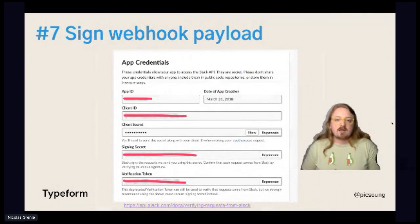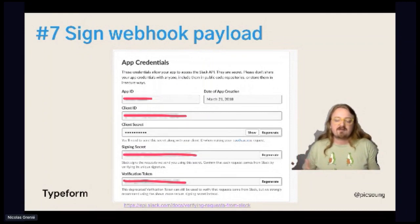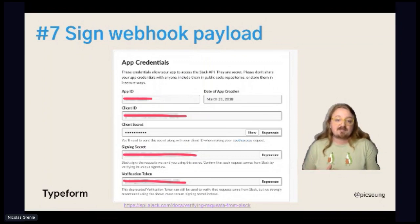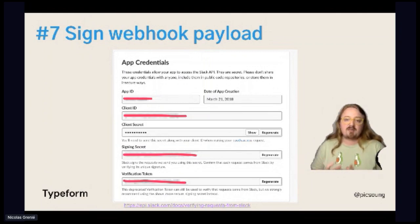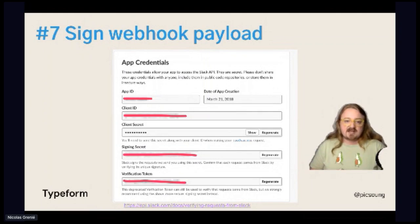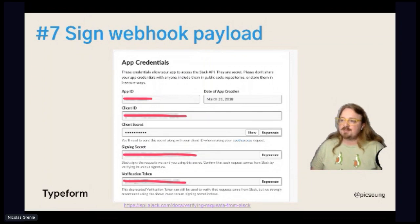Another thing that's becoming a standard now is signing webhooks. A webhook is actually just a URL available somewhere on your server or cloud function, and it's pretty easy to find the URL. But if someone sends data to it, you want to be sure that this data is what you were expecting. If you make a webhook that waits for data from Typeform, you don't want it to react to any other source. A way to do this — as Slack does — is to sign the payload and have the developer verify the signature, making sure it comes from the right source. This is a standard on Slack, GitHub, and Typeform.